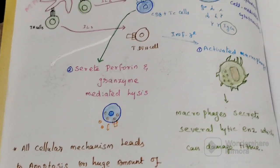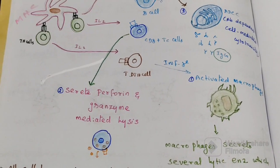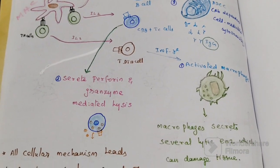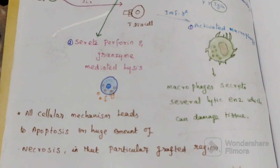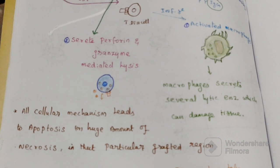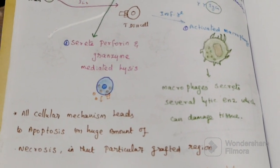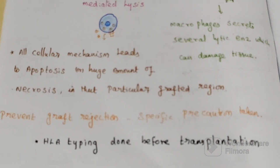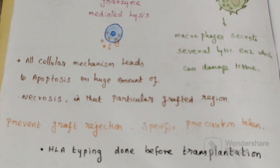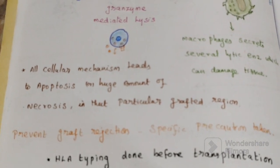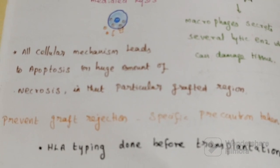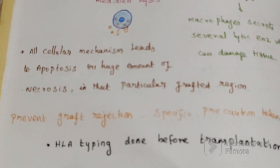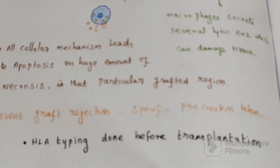A combination of all these cellular mechanisms leads to necrosis or apoptosis in that particular grafted region, resulting in graft rejection. Now, in order to prevent graft rejection, specific precautions are taken. First and foremost is HLA typing, since MHC molecules play a key role in the sensitization phase of graft rejection.